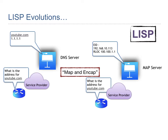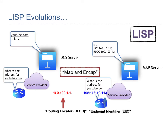Once the RLOC-to-EID mapping is given to the requesting routing locator, an automatic tunnel is made between the two RLOC locators as the outer header, and the inner header is the EID. It's as simple as DNS mapping or LISP mapping — just map it and encapsulate to the endpoint. I hope you are enjoying; if you have any queries or doubts, you can add them to the comment section.